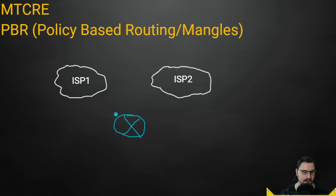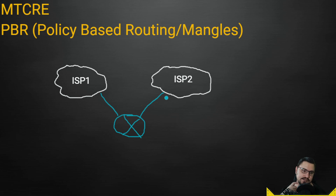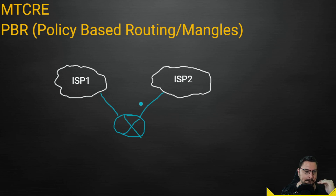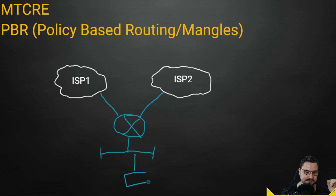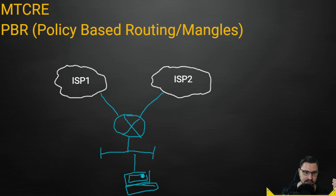The two ISP links might be fiber and wireless, two fiber links, or two broadband links — dual internet for redundancy. We'll look at failover in a different video. For now, focus on policy-based routing. With a LAN network behind the router, whenever traffic arrives the router's firewall — as part of the route selection process — checks firewall rules, which is where mangle falls.